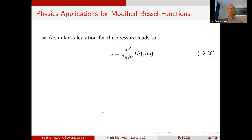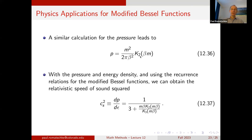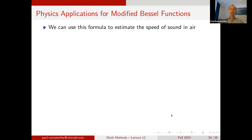Now that we have pressure P and energy density ε in terms of modified Bessel functions, we can define the speed of sound squared as dP/dε. Using the recurrence relation and differentiating, we find that the speed of sound squared is 1/3 plus a combination of K_2 and K_3. This result holds for a relativistic gas, but we can also use it in the non-relativistic limit to estimate the speed of sound in air.